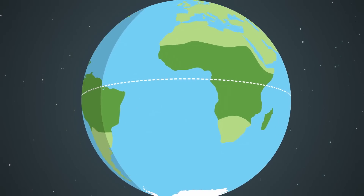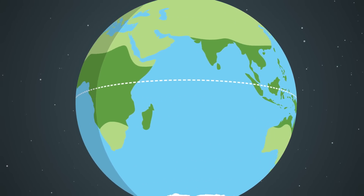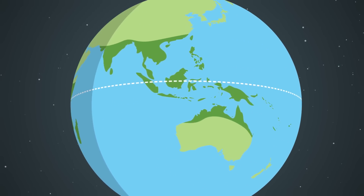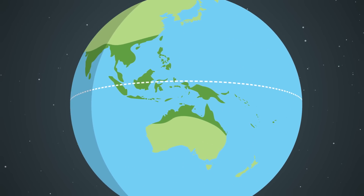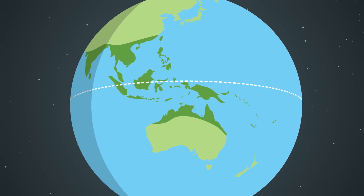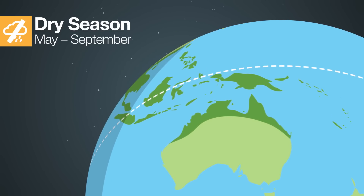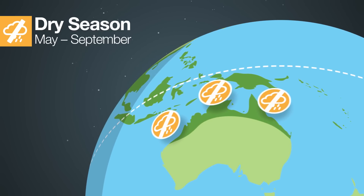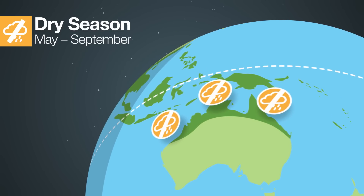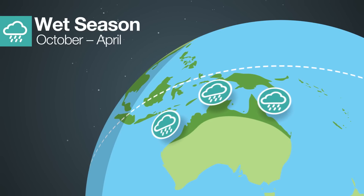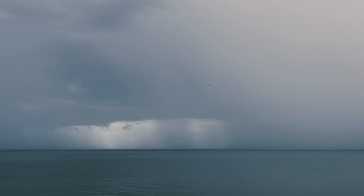There are monsoonal regions across most of the world's tropical areas, including northern Australia. In northern Australia we have two distinct seasons: a dry season which roughly coincides with the southern winter, and a wet season which peaks during the summer months.